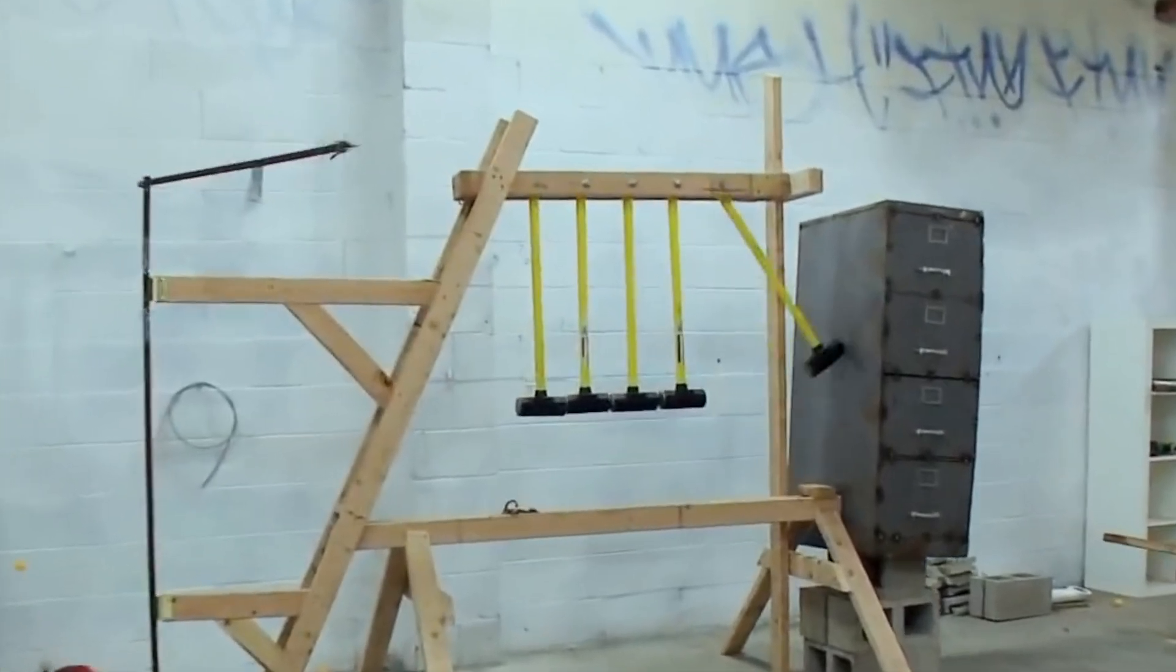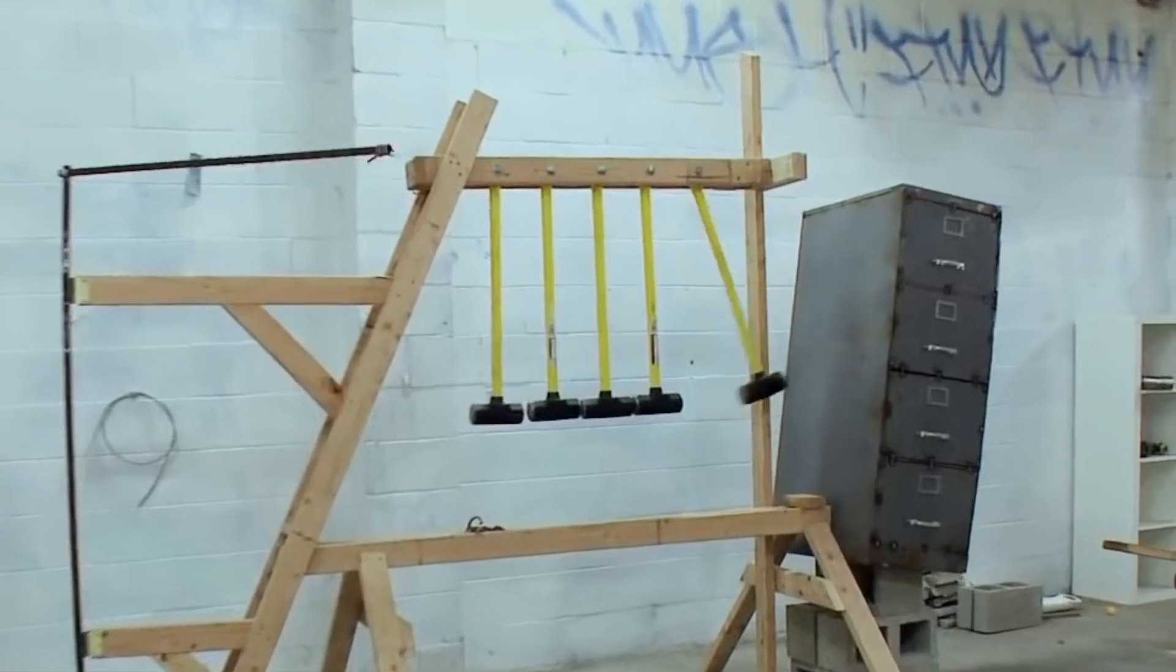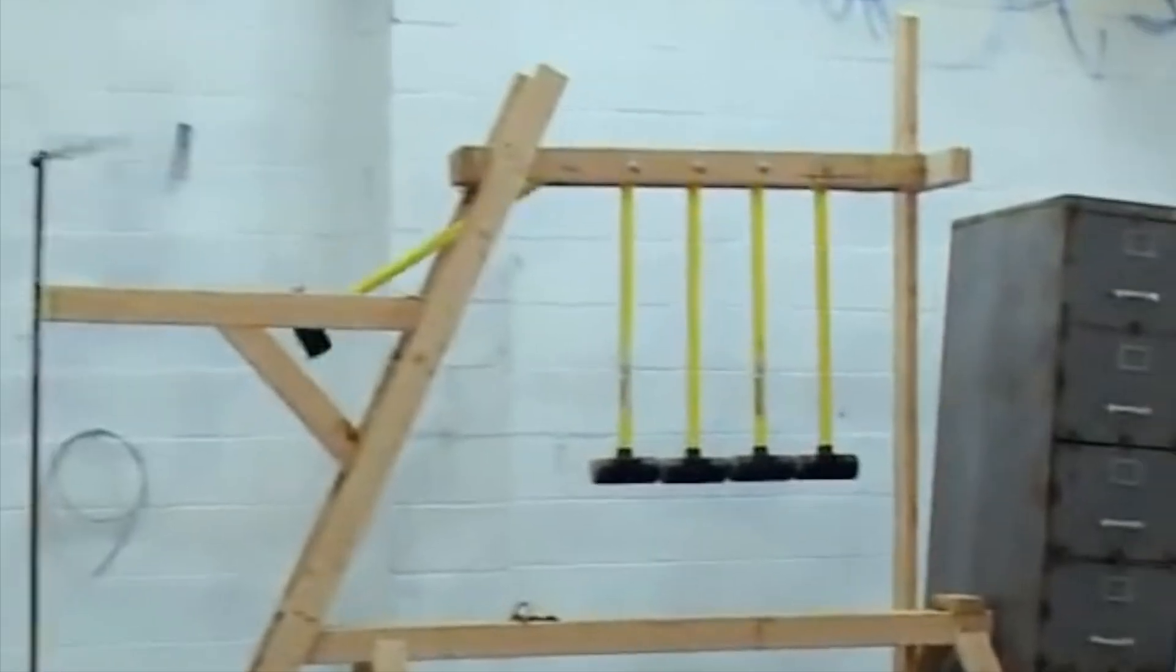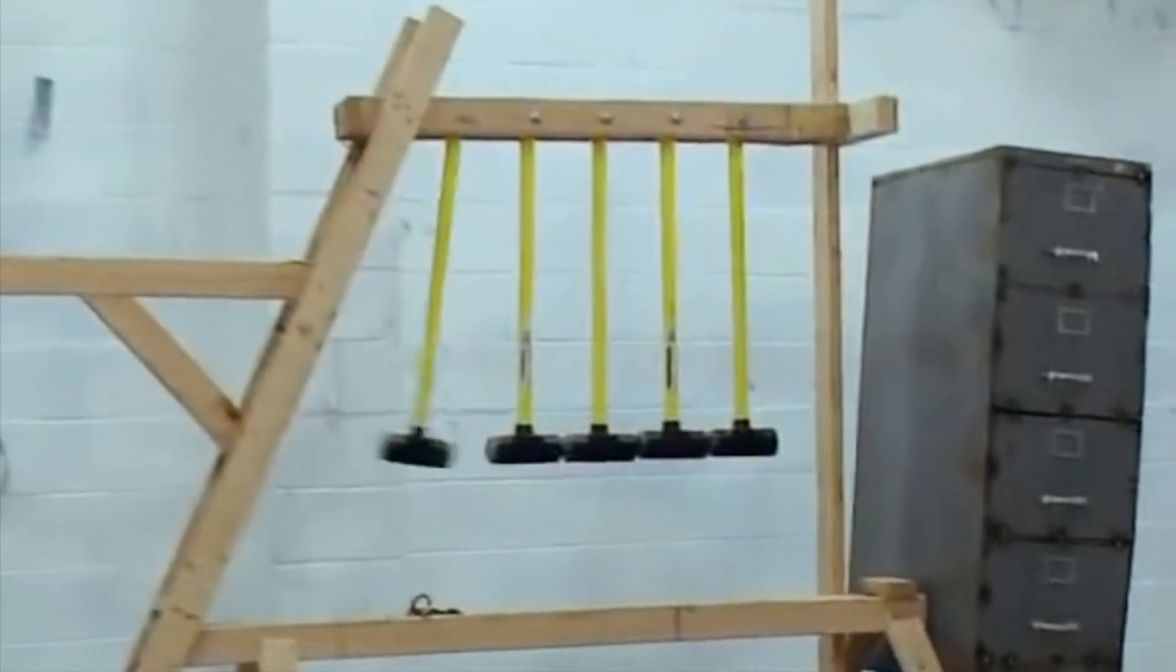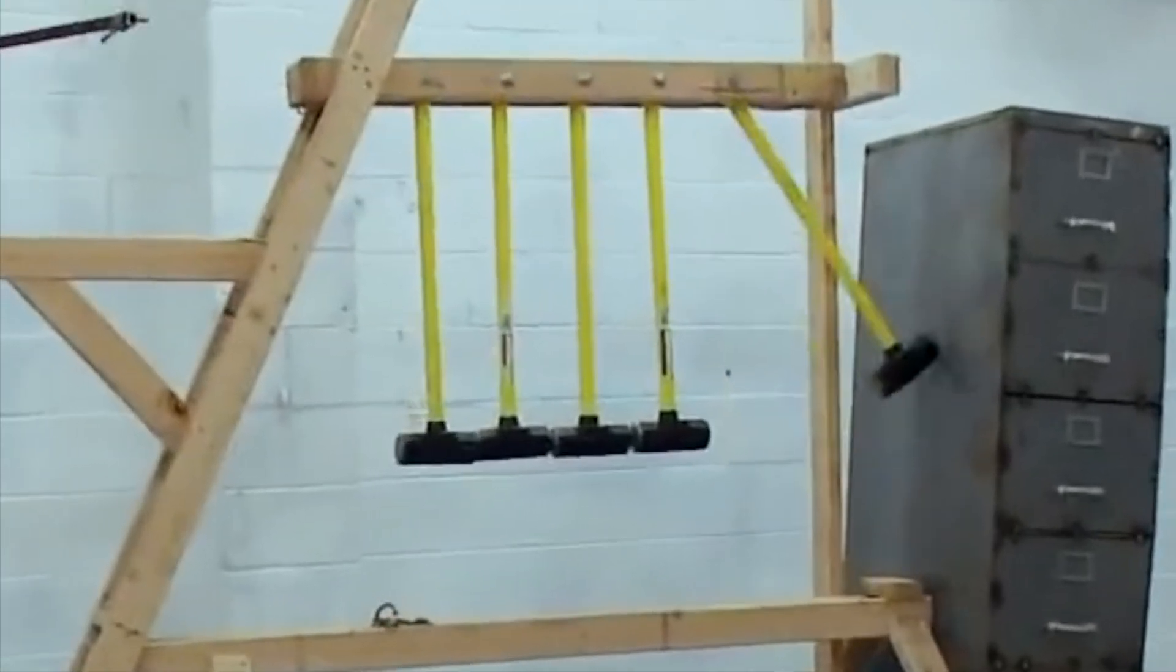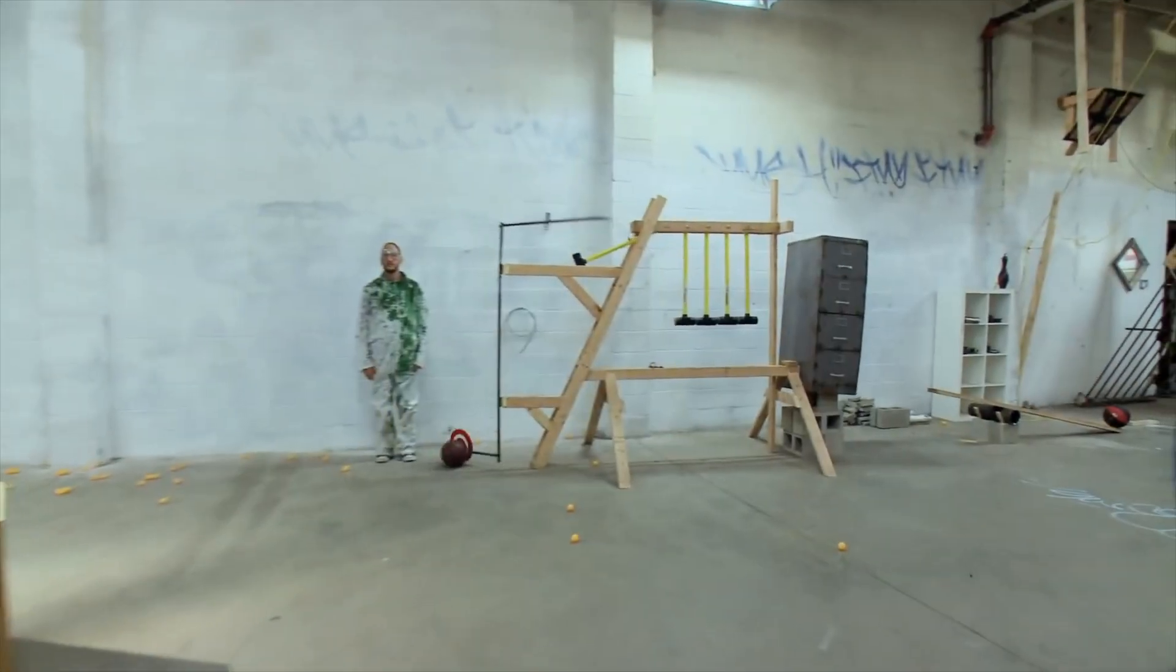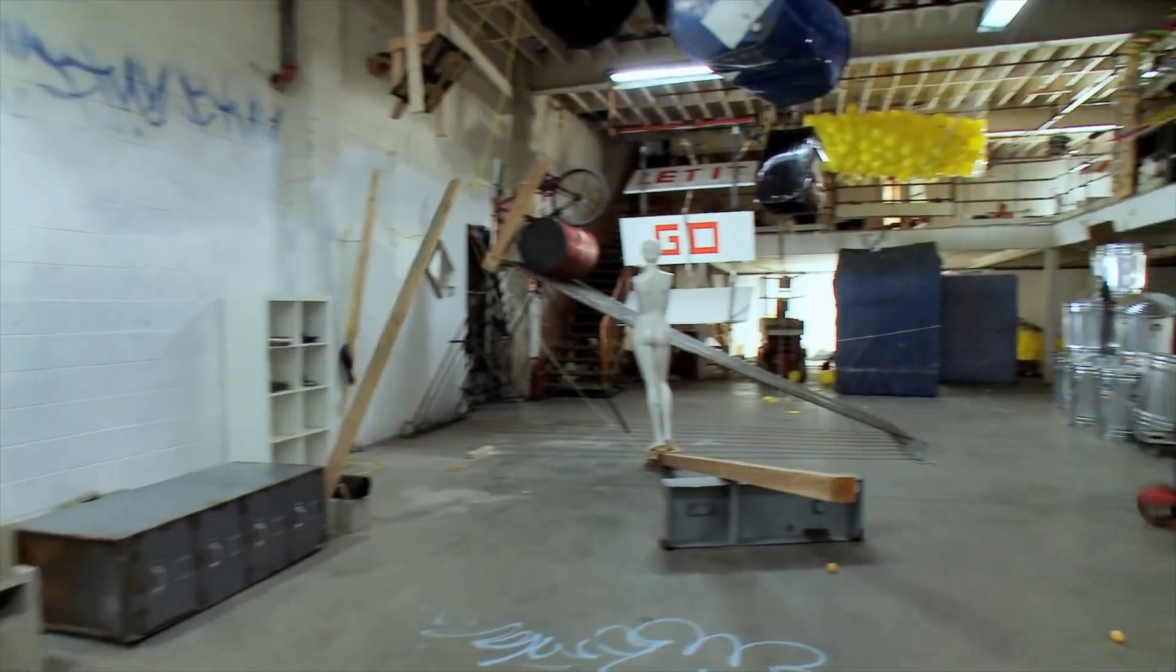As you can see a series of sledgehammers was used which perfectly transfers the energy from the first hammer directly to the final hammer with such conservation of energy and momentum that it was able to knock over something as large as that file cabinet. Just truly a brilliant example and a great way to wrap up our video on Newton's Cradles.